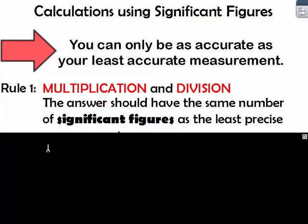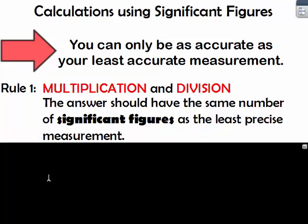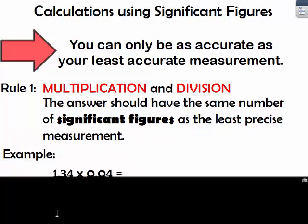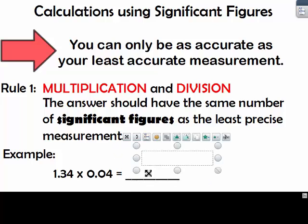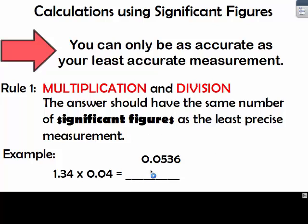When you're multiplying and dividing, your answer should have the same number of significant figures as the least precise measurement. So in this case, 1.34 times 0.04 gives you in the calculator 0.0536.